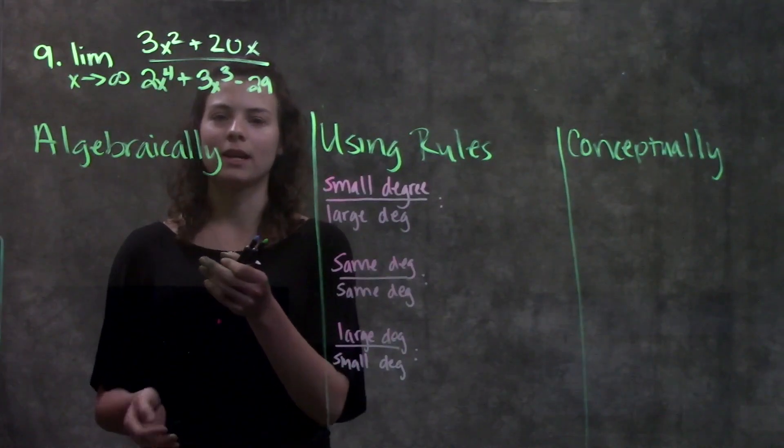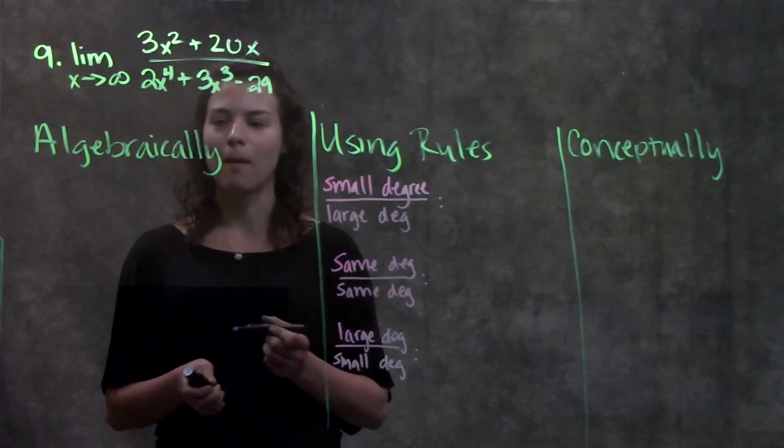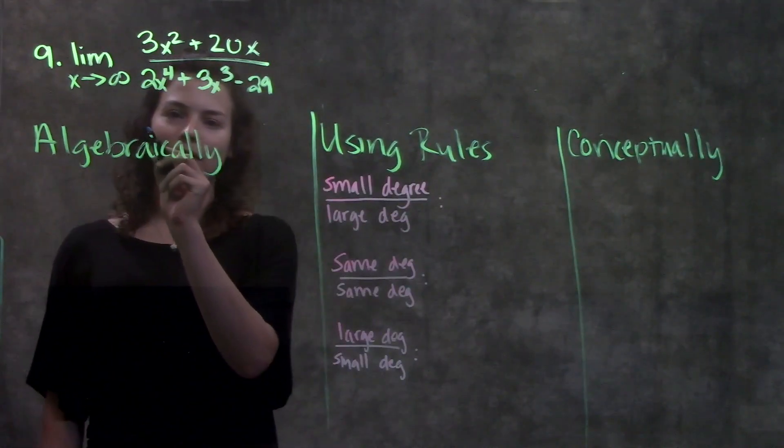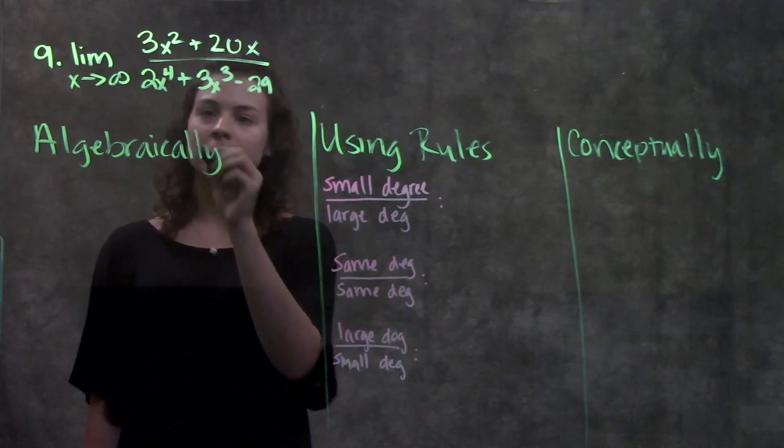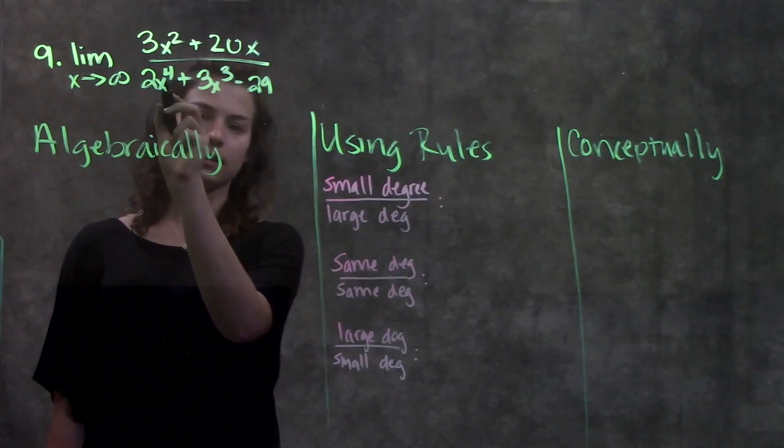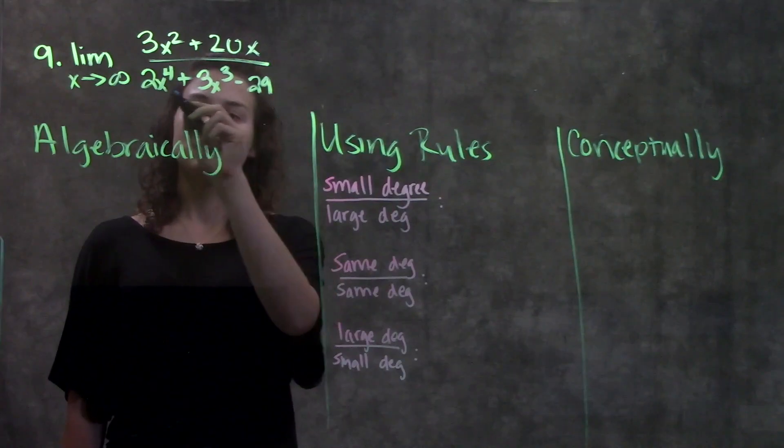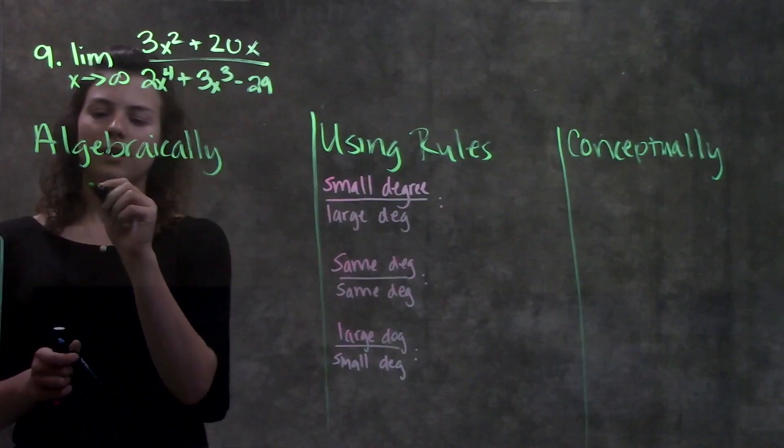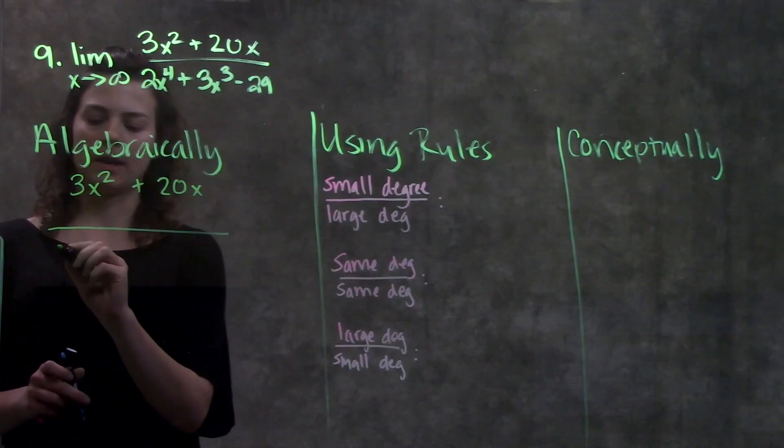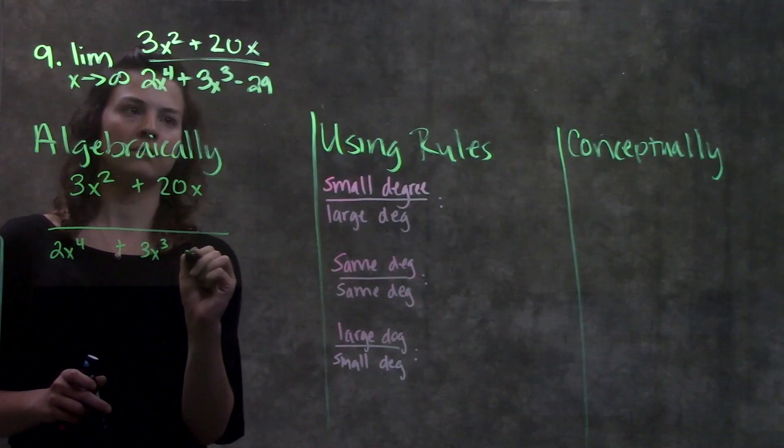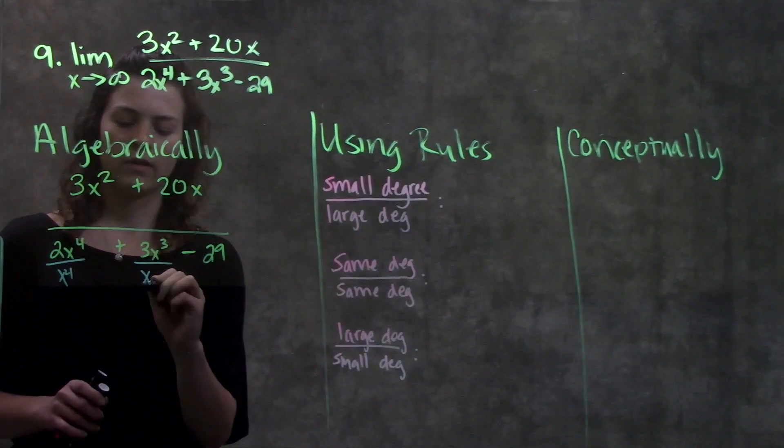We have this problem here. The first way we're going to solve it is algebraically. If you're like me and you need a concrete step-by-step, this is the way for you. Whenever you have limits that approach infinity, you take the leading term in the denominator, and by leading term I just mean the variable with the highest power, so in this case that would be x to the fourth. You take that leading term and divide every other term both in the denominator and in the numerator by that leading term. So I have 3x squared plus 20x, and on the denominator I have 2x to the fourth plus 3x cubed minus 29.